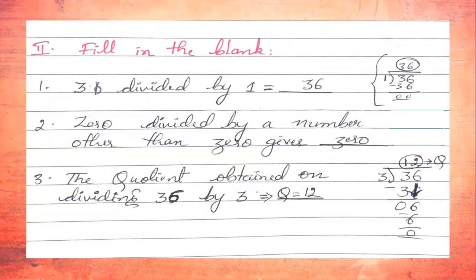The second main exercise: fill in the blanks. First: 36 ÷ 1 = ___ . When any number is divided by 1, the quotient equals the number itself, so the answer is 36. Second: 0 divided by any number other than 0 gives ___. When you take 0 and divide by any number, the answer is 0.